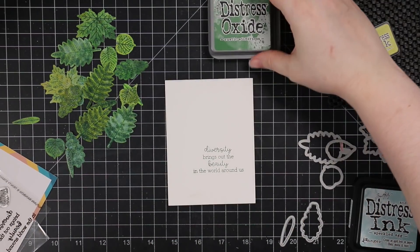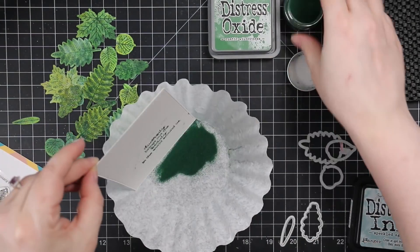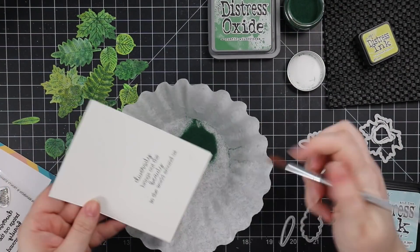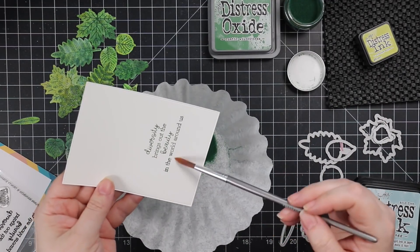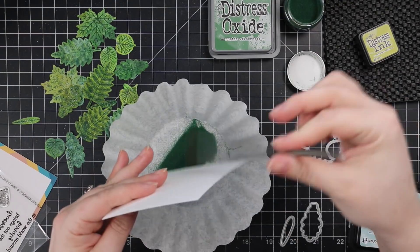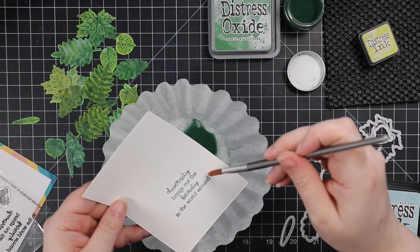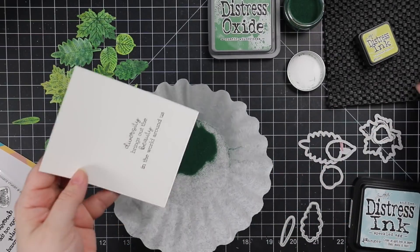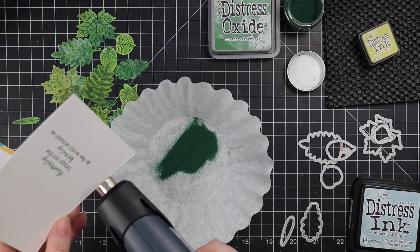So before I actually get to the stenciling though, I just kind of use that as a visual and I stamped a little sentiment from this set, which I love. And same thing, I use my antistatic powder tool. I stamped the sentiment with that rustic wilderness distress oxide ink, and then I coated it with the rustic wilderness embossing powder.